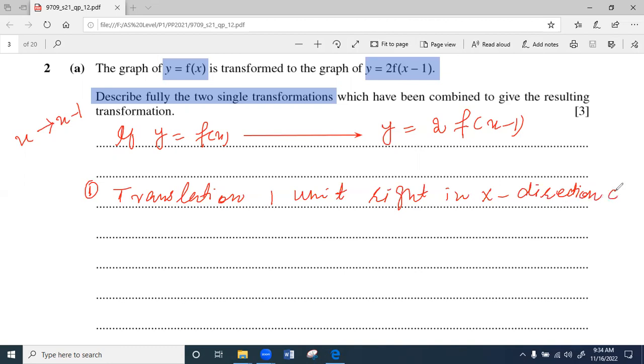You can simply write it like this: translation, and translation vector is, because it is in the right direction, it will be positive one. Because there is no change in y direction, so put here zero. It is your choice.